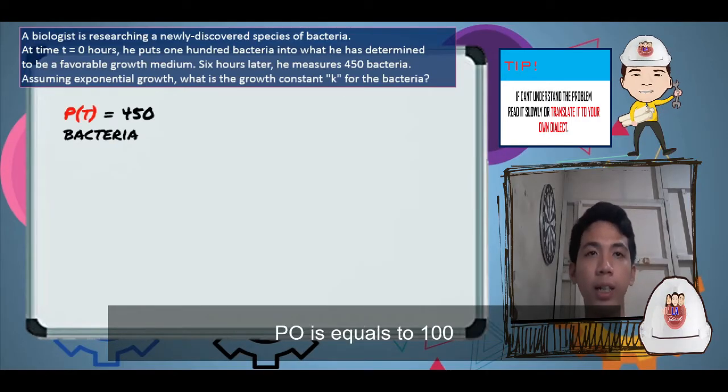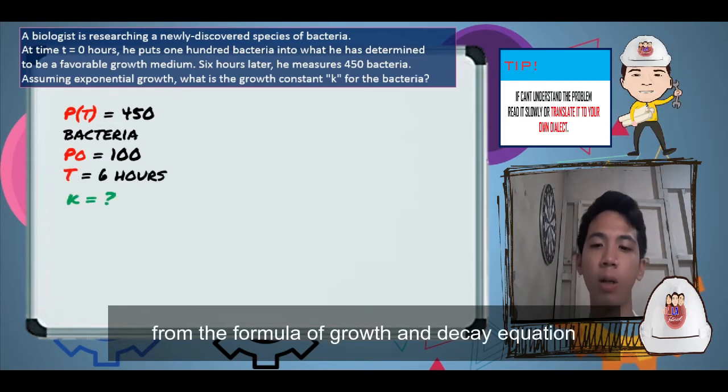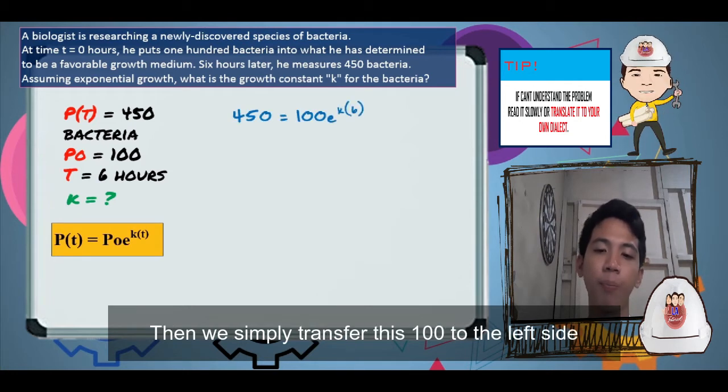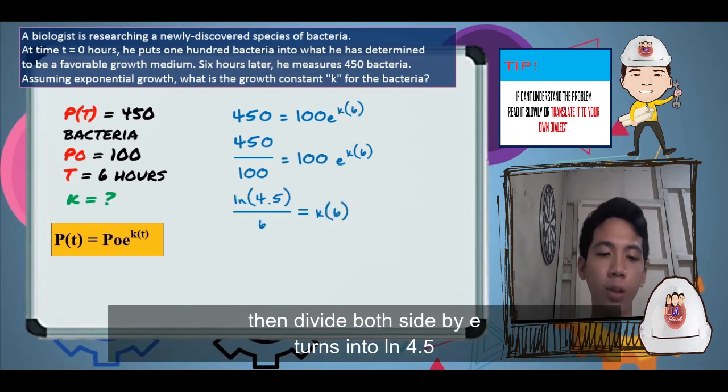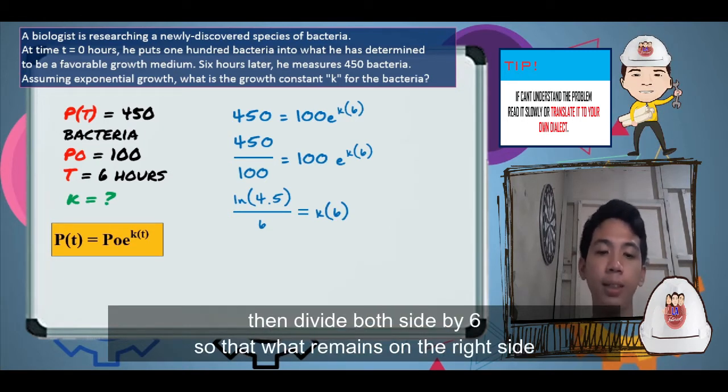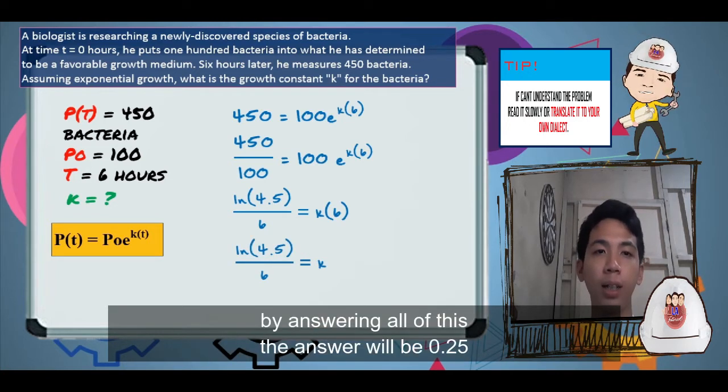What we have is 450 bacteria, P₀ equals 100, t equals 6 hours, and k is unknown. From the formula of growth and decay equation, we simply plug in all our values. Then, we transfer this 100 to the left side by dividing both sides so that what remains is e raised to k times 6. Then, dividing both sides and applying natural logarithm gives us ln(4.5) equals 6k. Then, divide both sides by 6 so that what remains on the right side is k. By solving this, the answer will be 0.25.